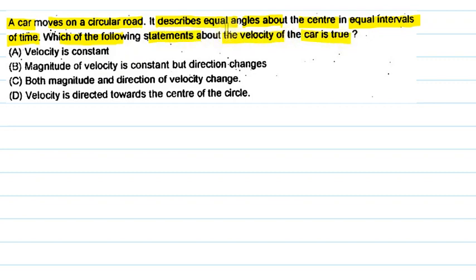Which statement about the velocity of the car is true? A: Velocity is constant. B: Magnitude of velocity is constant but direction changes. C: Both magnitude and direction of velocity changes. D: Velocity is directed towards the center of the circle. Let us see the answer for this question.